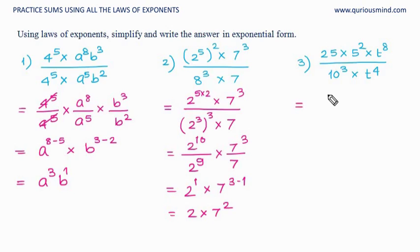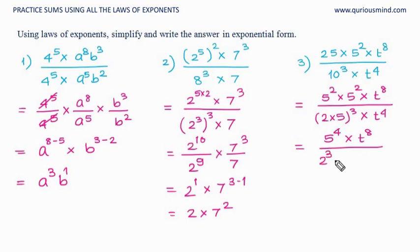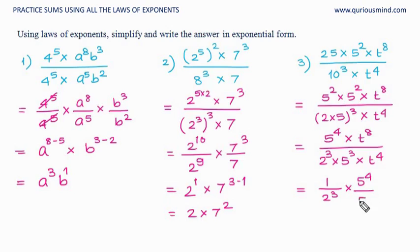For the last one, 25 can be written as 5 squared. So we have 5 squared into 5 squared into t raised to 8. Then 10 can be written as 2 into 5. Writing the prime factors, whole raised to 3, into t raised to 4. That is equal to 5 raised to 2 plus 2 — multiplication means addition of powers, same base. Into t raised to 8, upon 2 raised to 3 into 5 raised to 3 into t raised to 4 into t raised to 4. Now we separate them.